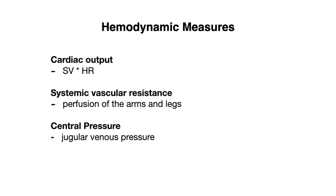Before we get started, we need to understand three different hemodynamic measures that are important when talking about shock. The first is cardiac output, which is defined by stroke volume times heart rate. The next is systemic vascular resistance, which we can assess by looking at perfusion of the extremities. And the third is central venous pressure, which is determined by the jugular venous pressure.